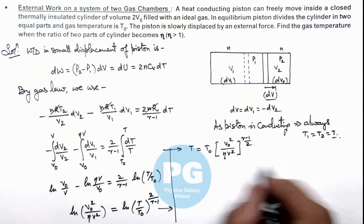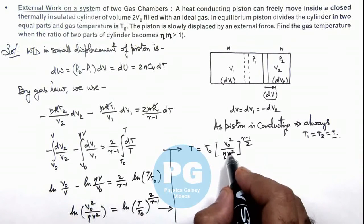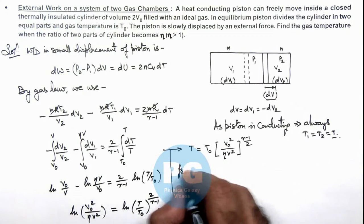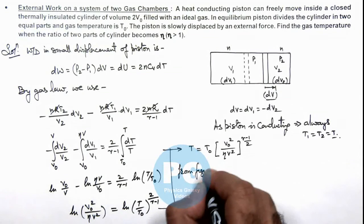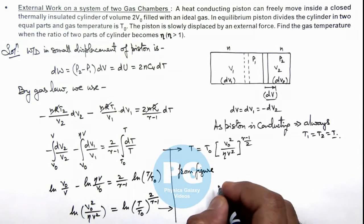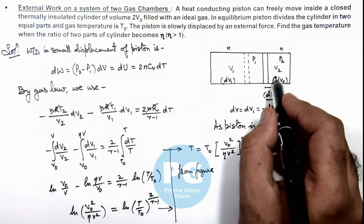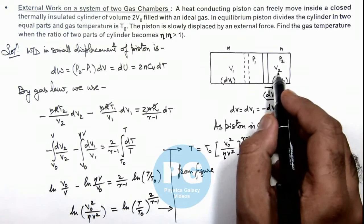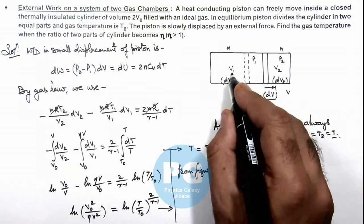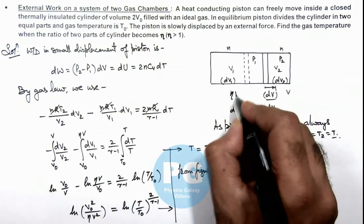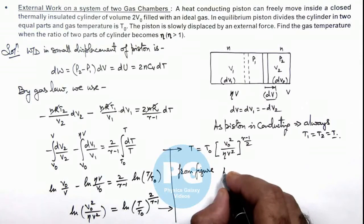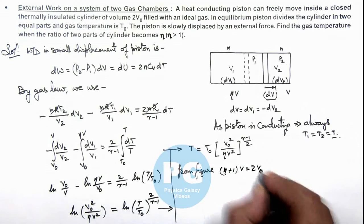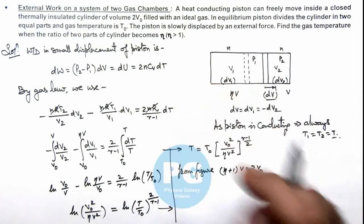And here we can relate V₀ and V from figure. Here we can write when the volume of a part, say V₂ is V and V₁ is ηV, then we can write (η+1)V should be equal to 2V₀, as the overall volume of the cylinder remains constant.